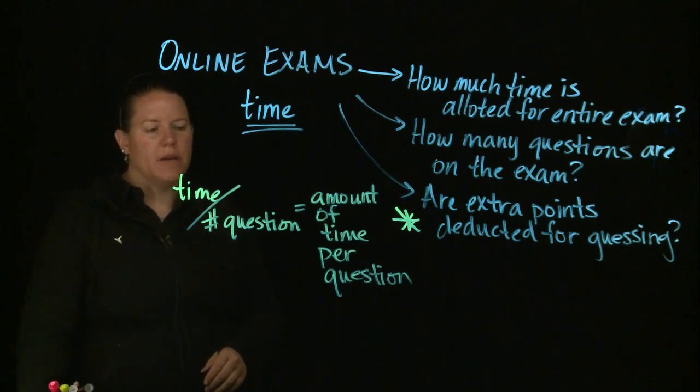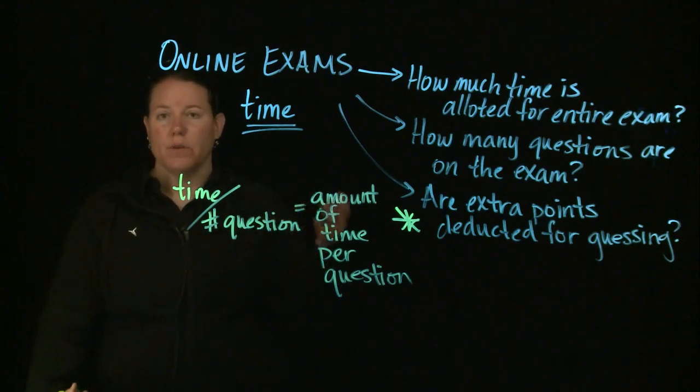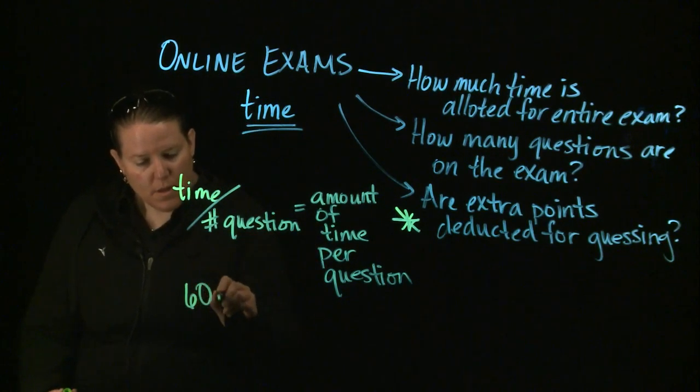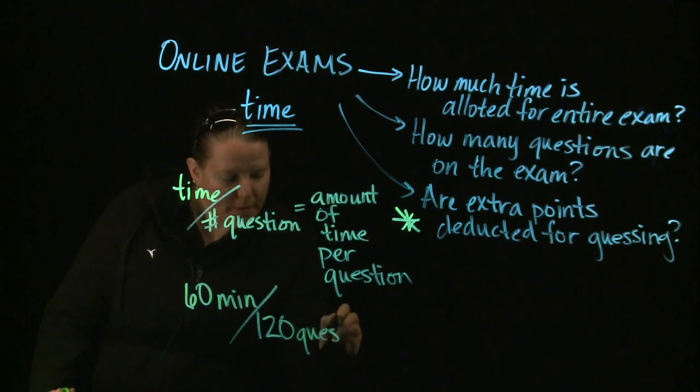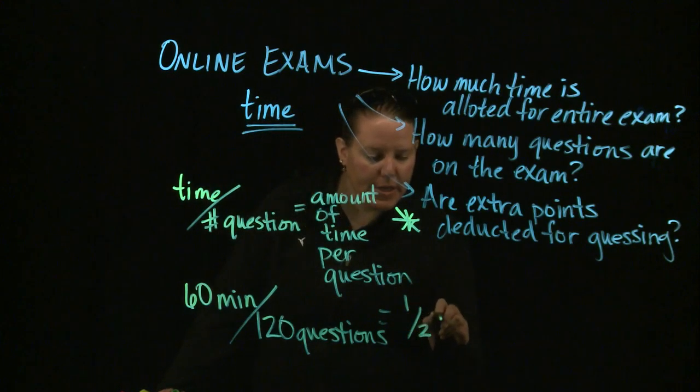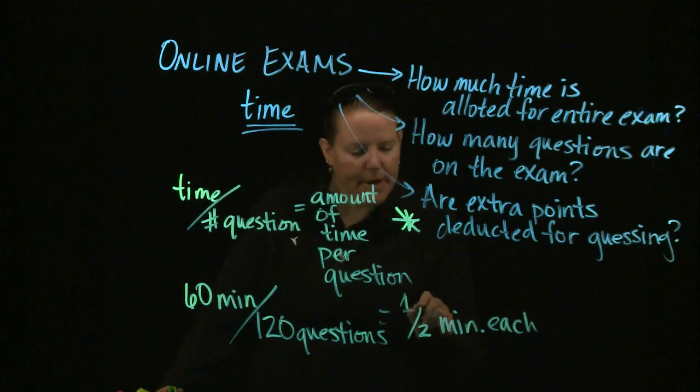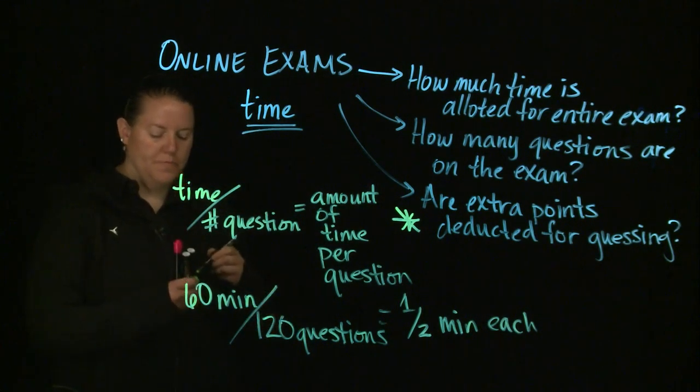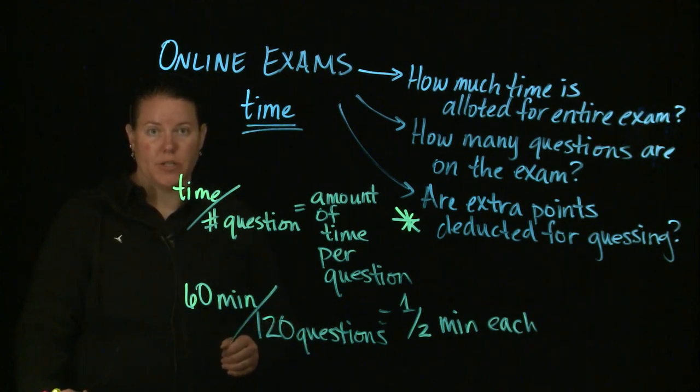So you're looking at the amount of time per question and you're saying, okay, I have, for instance, if it's a 60 minute test and there are 120 questions, then you have about half a minute each. That's actually a decimal. So a half a minute each means that you got 30 seconds for each question.